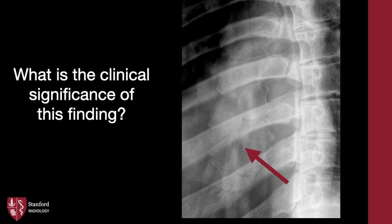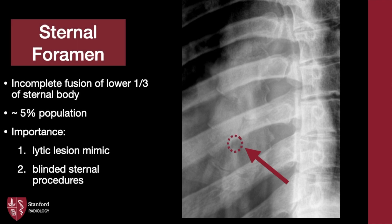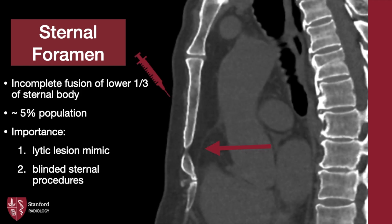What is the significance of this finding? The sternal foramen is an incomplete fusion of the lower third of the sternal body. This is a young patient with an immature skeleton noted by additional unfused sternal segments, so possibly this may fuse into adulthood. The clinical importance is that this lucency may be falsely interpreted as a lytic lesion on radiographs. Also, blinded procedures such as bone marrow extractions may be consequential without knowledge of these variants, as the pleura or pericardium may abut the sternum. Here is how the foramen looks to most radiologists, as it is more visible on CT.